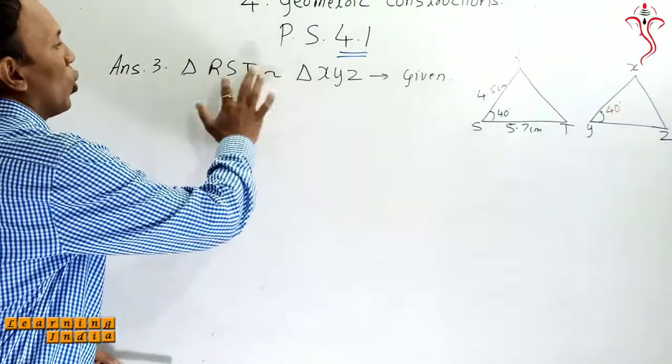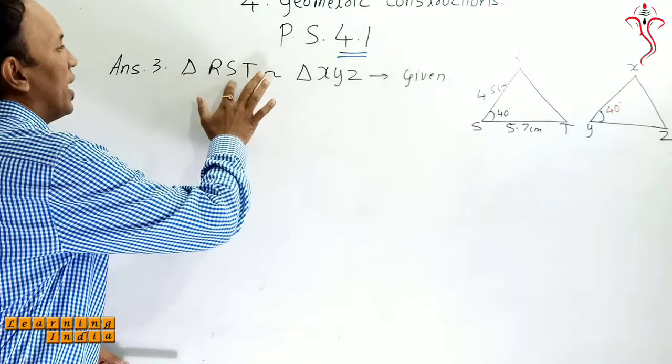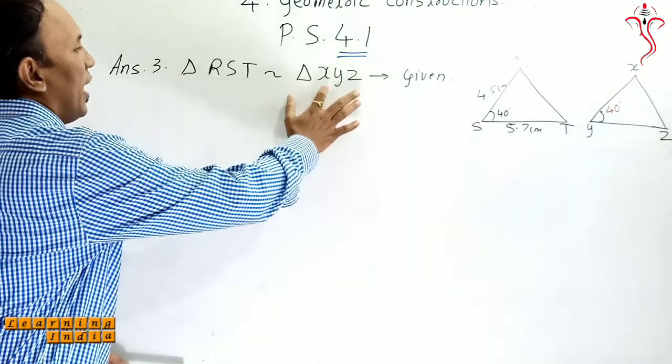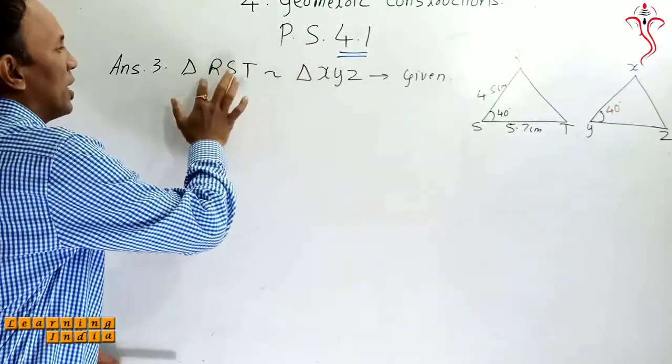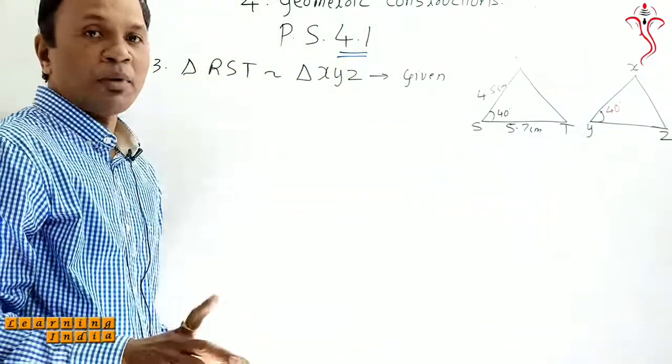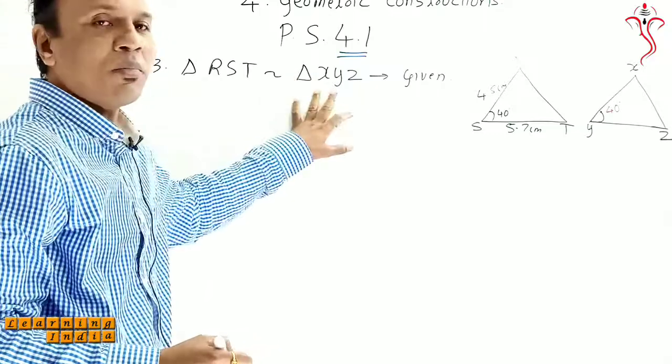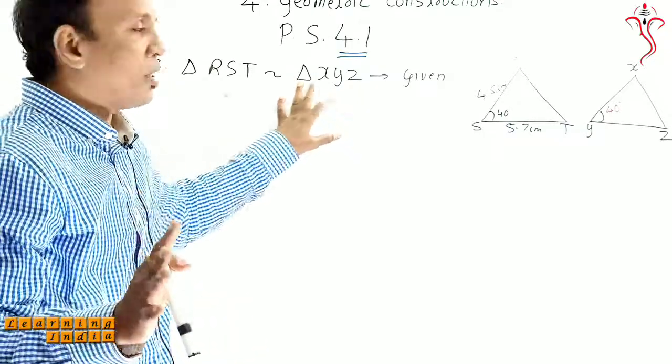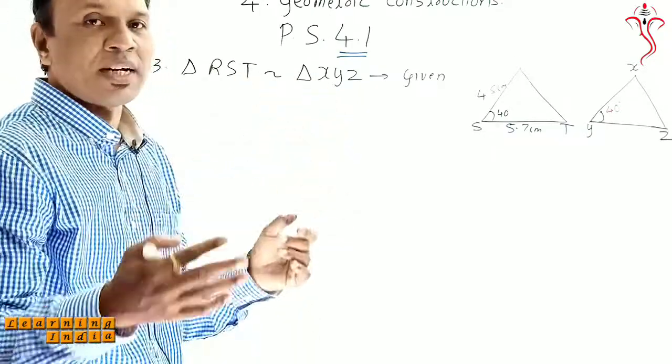First we have to look at the alphabet, whether the alphabet is common. Here is RST, here is XYZ. No alphabet is common, so no vertex is common between both the triangles.